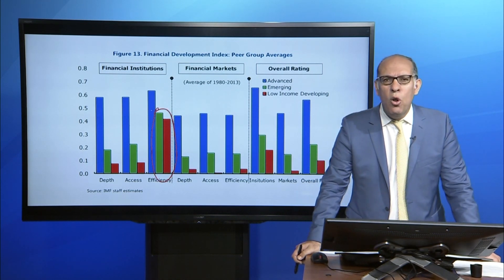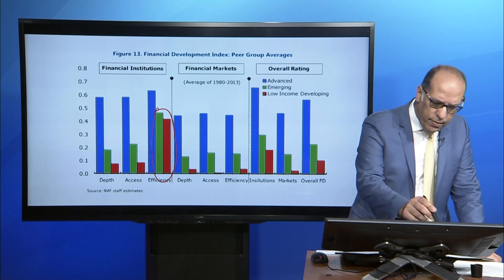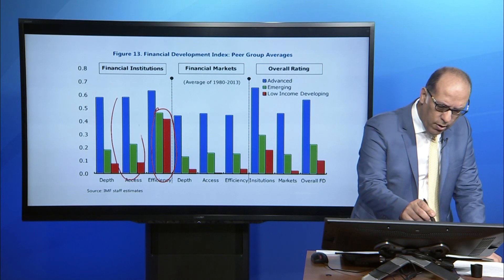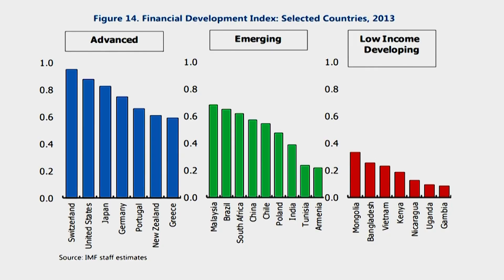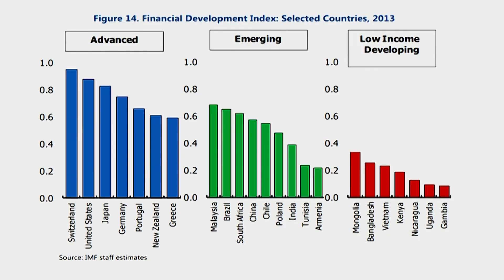Access is low on average across all income groups, making this an area of potential improvement. Looking at individual countries, there is variation in financial development within the same income group. Some large emerging markets, such as Brazil and Malaysia, have higher levels of financial development than certain advanced economies, such as Greece.